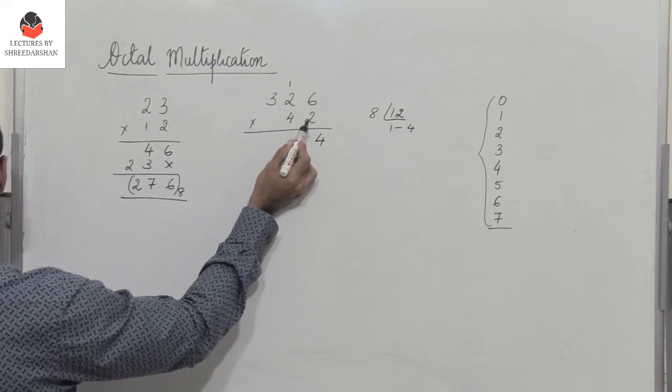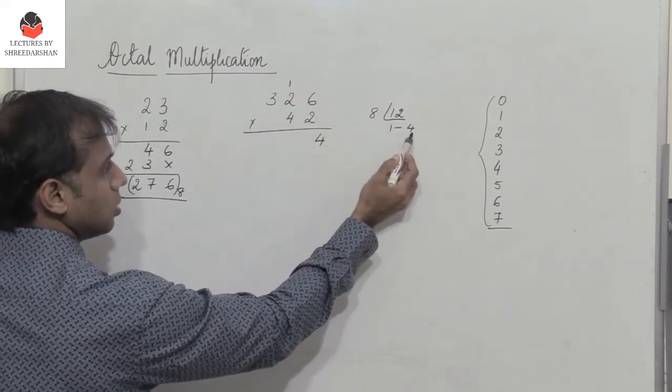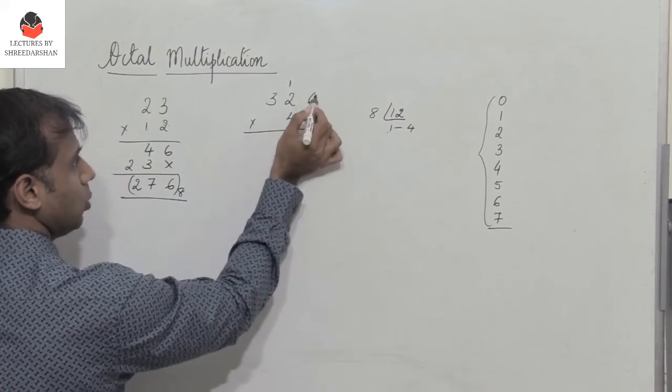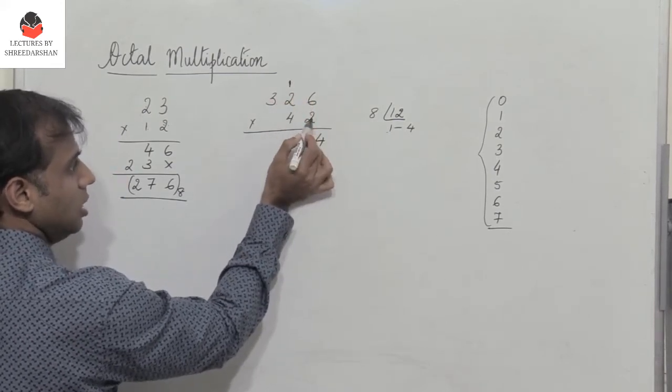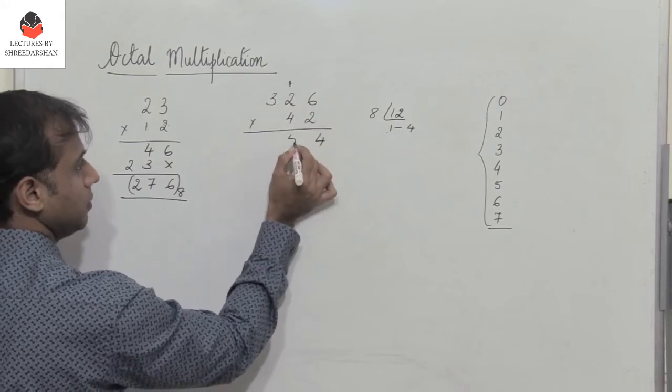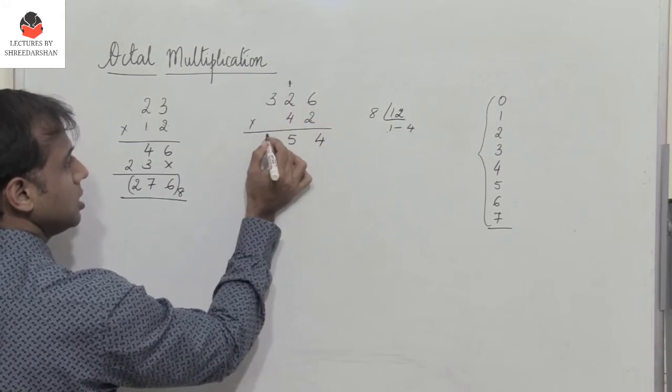So now what happens? So 6 into 2 is 12 in octal is 14. So I write 4 here and 1 is written here as the carry. So 2 into 2 is 4 plus 1 is 5. 2 into 3 is 6.